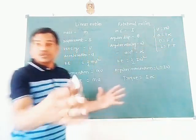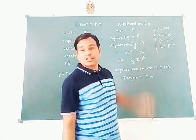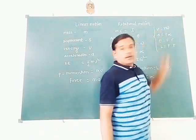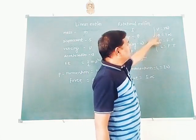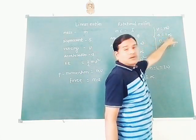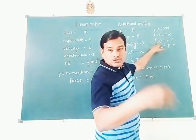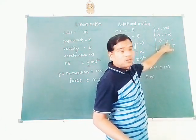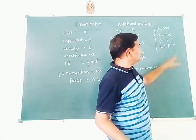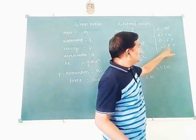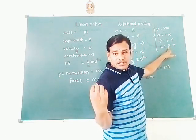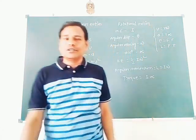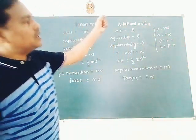This is the relation for rotational motion. Linear velocity equals R into angular velocity. Linear acceleration equals R into angular acceleration. Torque, which produces rotational motion, is equal to force into perpendicular distance. Angular momentum corresponds to linear momentum multiplied by perpendicular distance R.